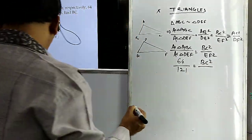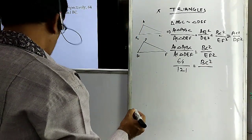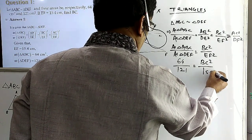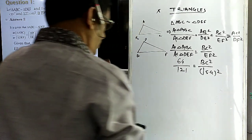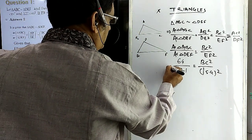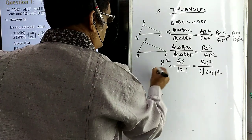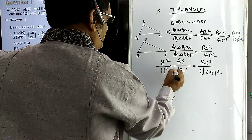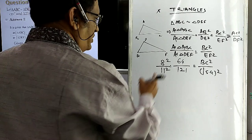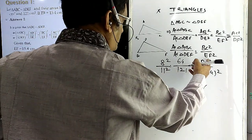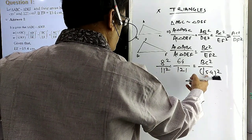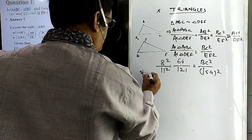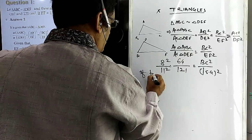That is equal to BC squared — not given — and EF is given as 15.4. Now you know that 64 equals 8 squared and 121 equals 11 squared. So we have 8 squared by 11 squared equal to BC squared by 15.4 squared.